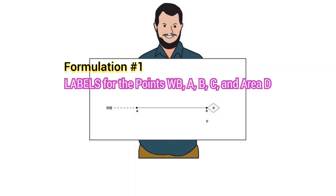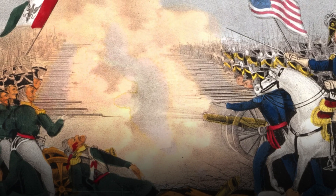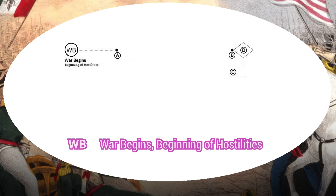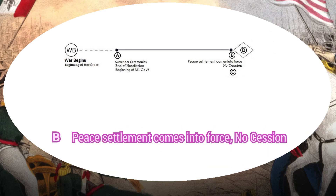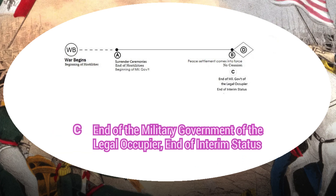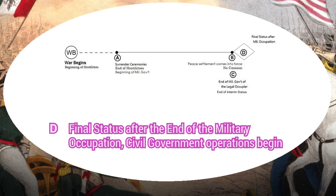Formulation No. 1 — Labels for the Points WB, A, B, C, and Area D. WB: War Begins, Beginning of Hostilities. A: Surrender Ceremonies, End of Hostilities, Beginning of Military Government. B: Peace Settlement Comes into Force, No Session. C: End of the Military Government of the Legal Occupier, End of Interim Status. D: Final Status After the End of the Military Occupation, Civil Government Operations Begin.